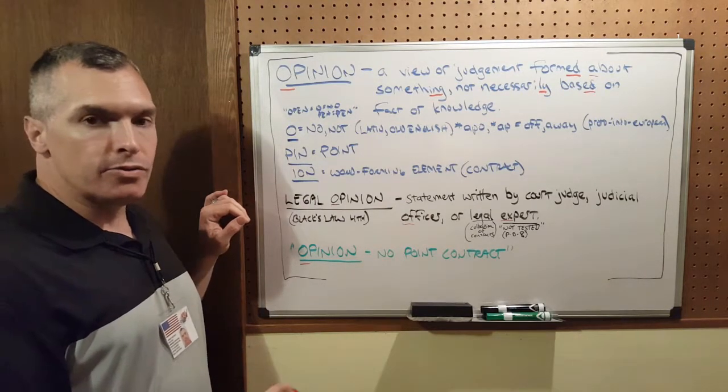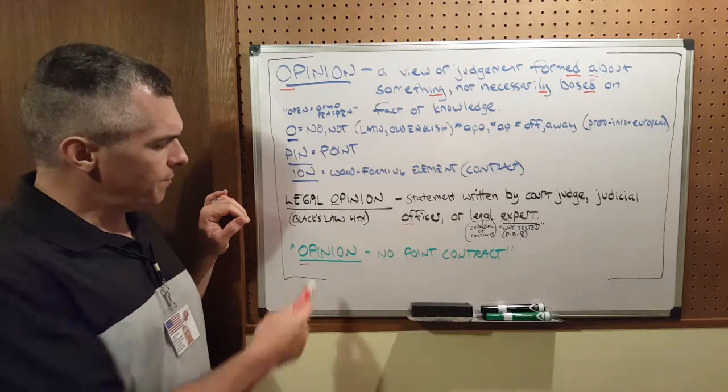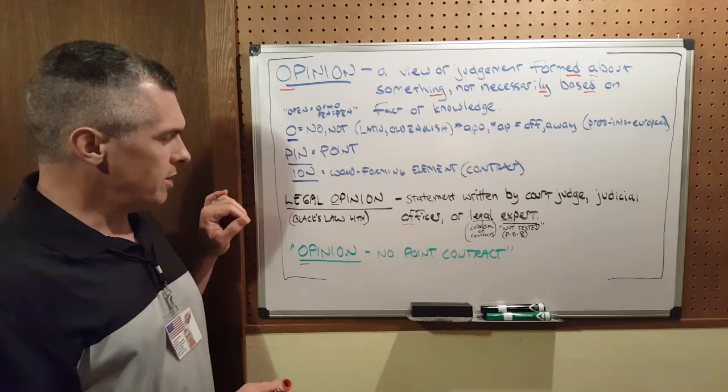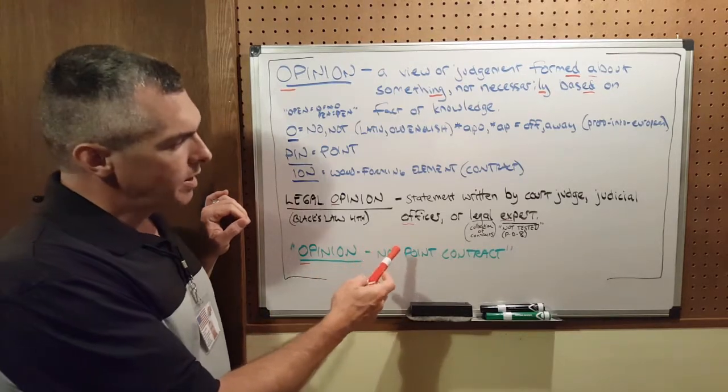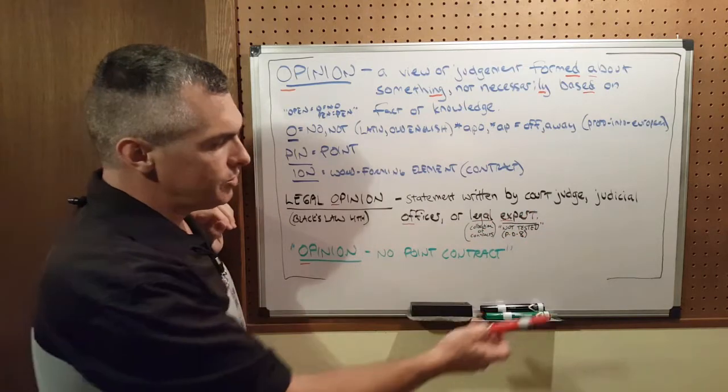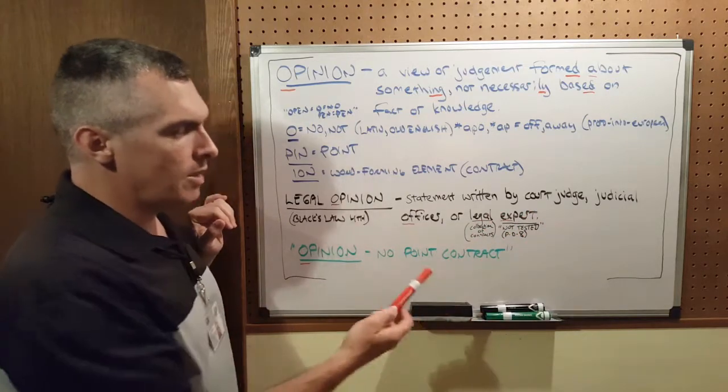Going further, I went into, I believe it was the fourth edition of Black's Law Dictionary, and I looked up legal opinion. And they defined it as a statement written by court judge, judicial officer, or legal expert.